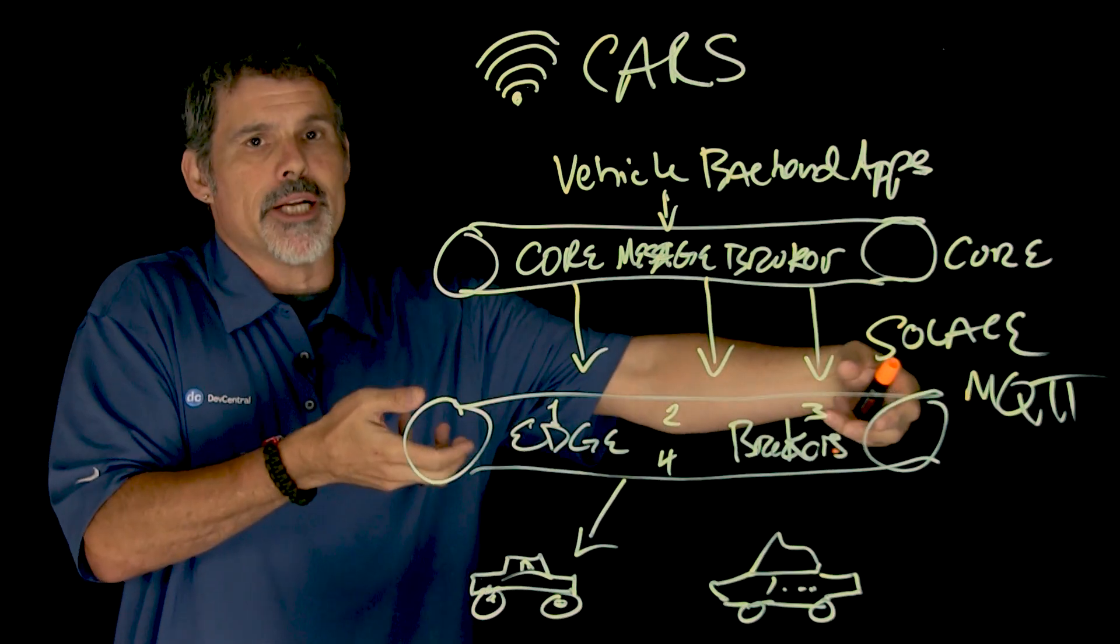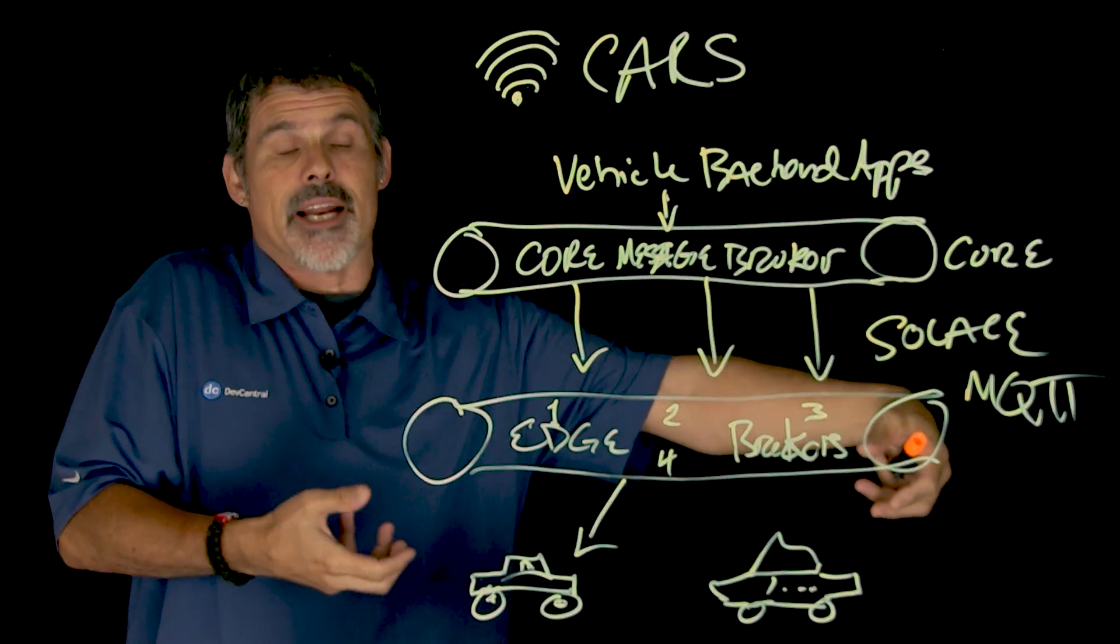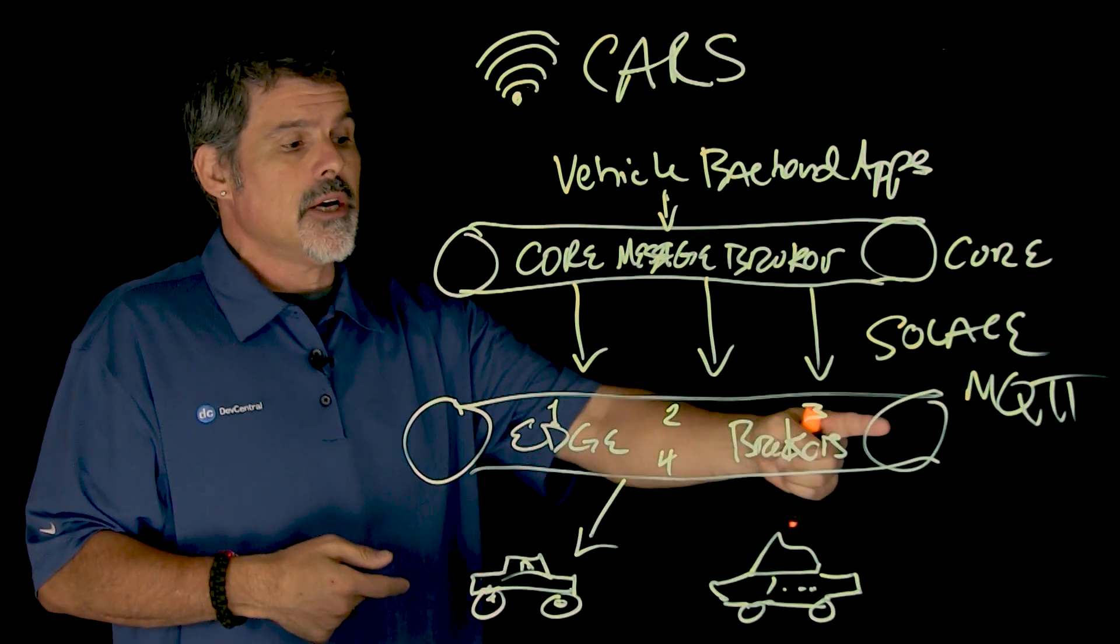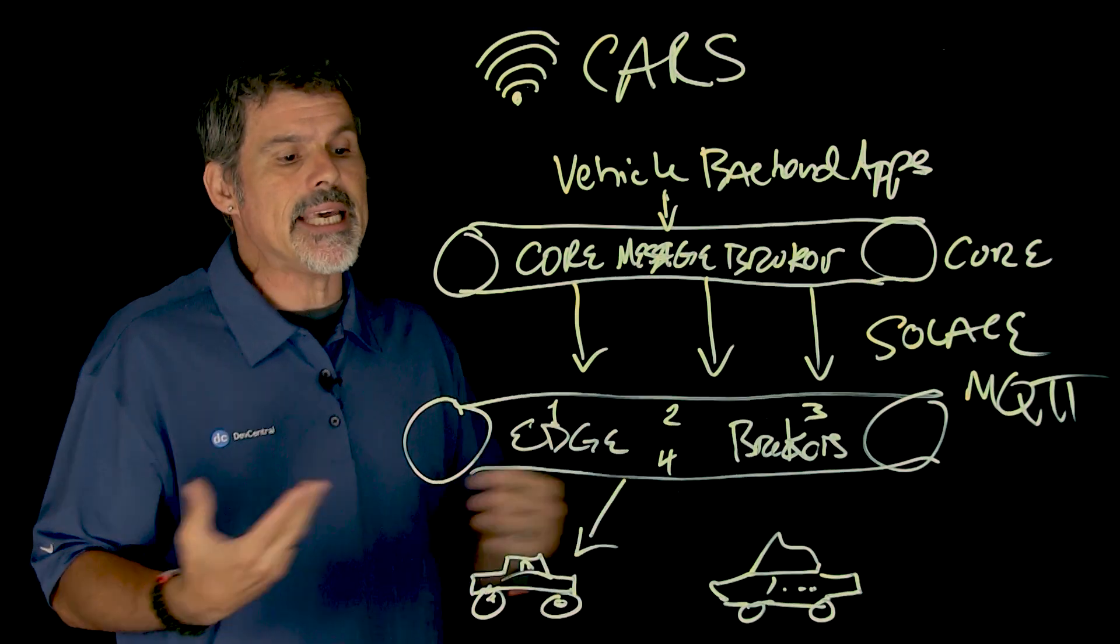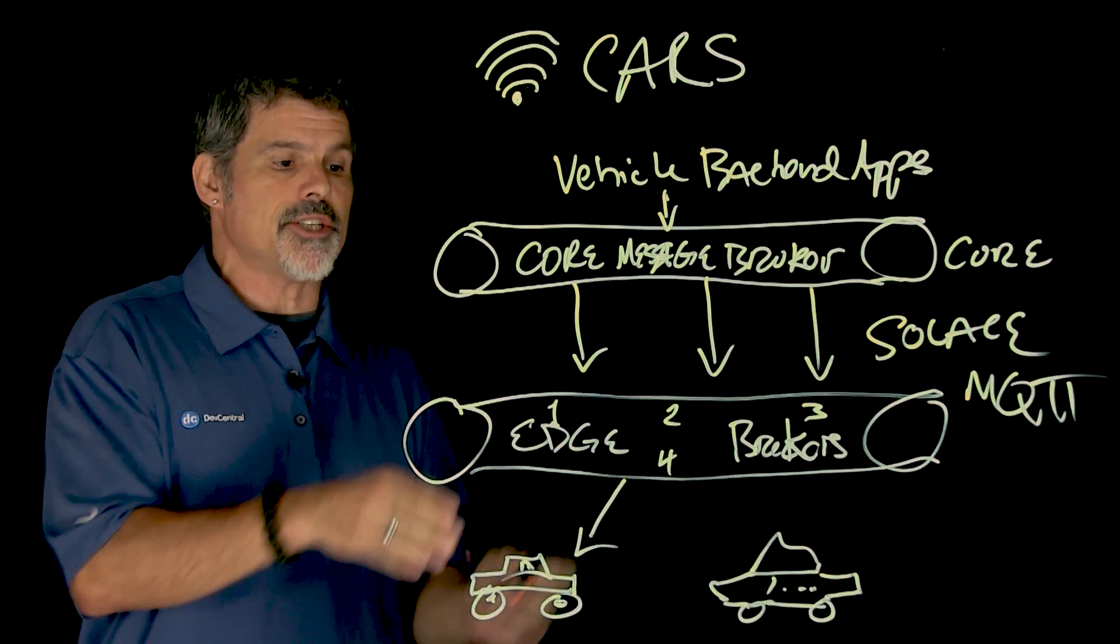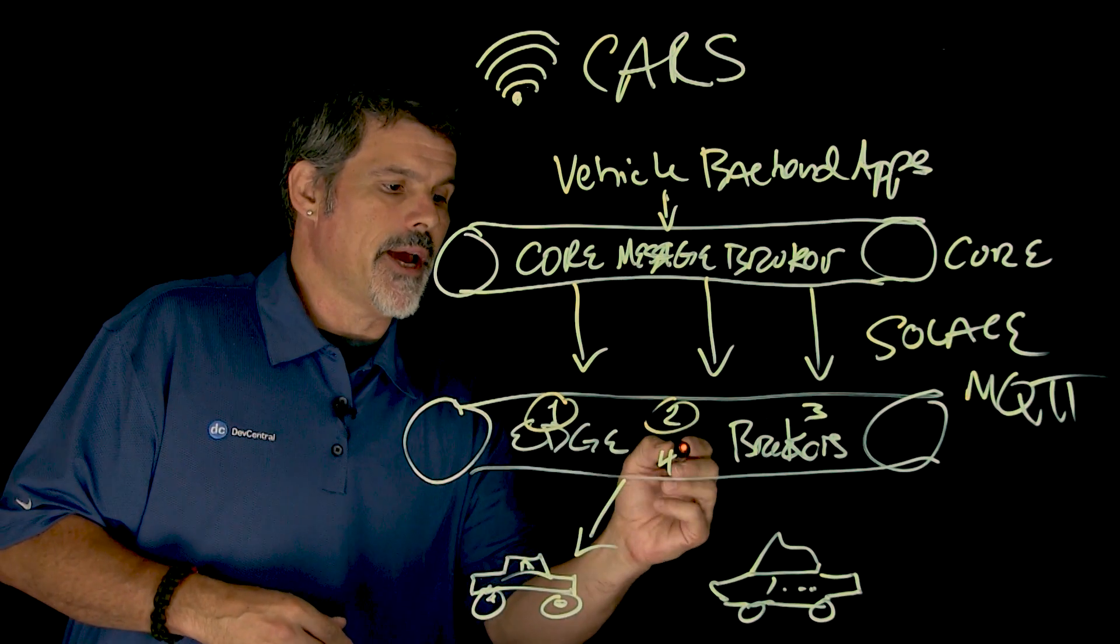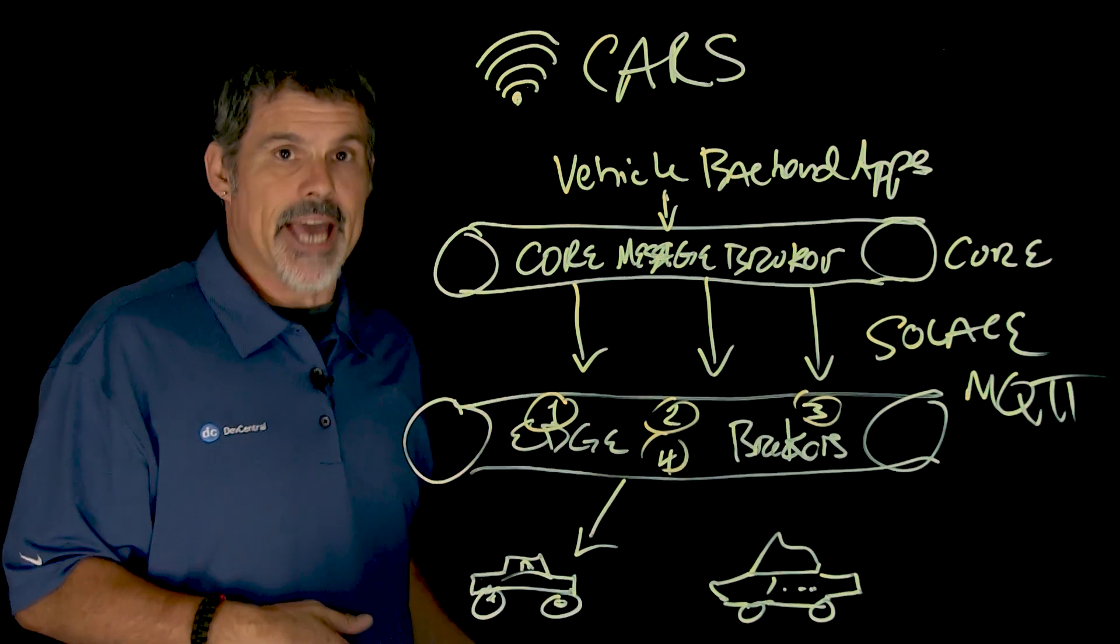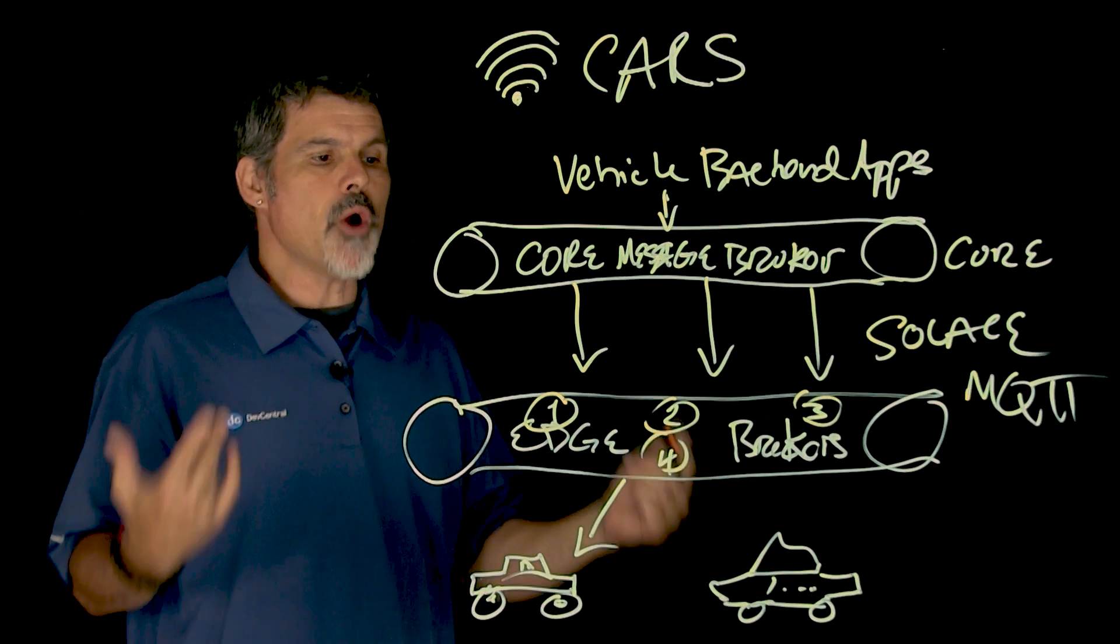And there's multiple edge brokers because, you know, as cars, as added cars get connected, you're going to need the additional brokers. Now, the key in all this really is making sure that there's the one-to-one mapping or the persistence to their specific edge message broker.